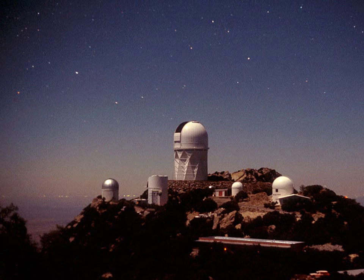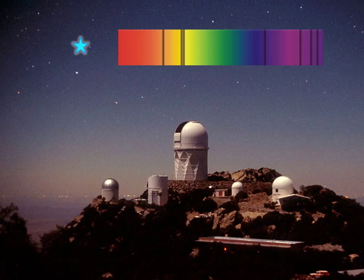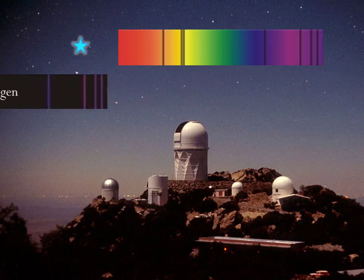At the telescope, we can take a spectrum of the object we're interested in, say a star. We compare the star spectrum with the spectra of gas tubes we took in the lab. We match up the lines, and then we can determine what elements are in the star.